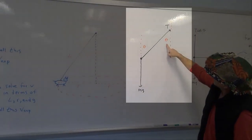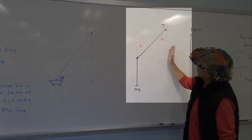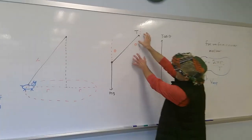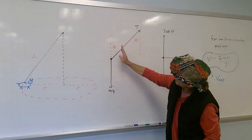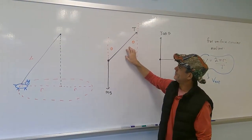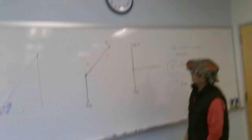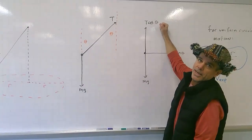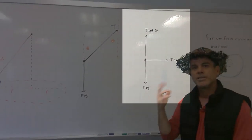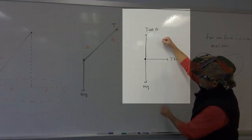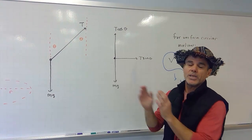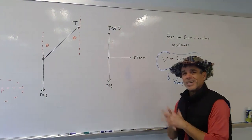If I call theta the angle between the vertical and the string, then I can break this up into x and y components. With my definition of theta being this angle, that's also going to be the angle between the vertical and the angle the tension is making — by alternate interior angles. So the situation is: I've got T cosine theta acting straight up, mg acting straight down, T sine theta acting towards the center of the circular path. The sum of the forces in the y direction is zero because this pig is not moving up and down. The sum of the forces in the x direction is mv squared over r.